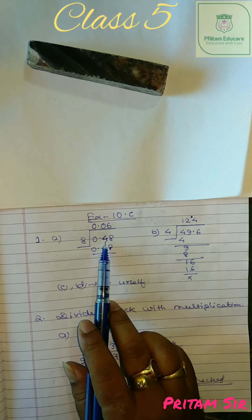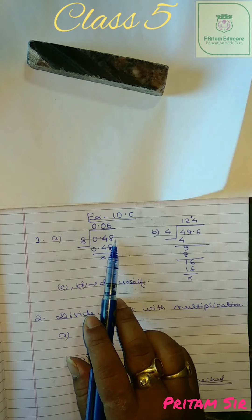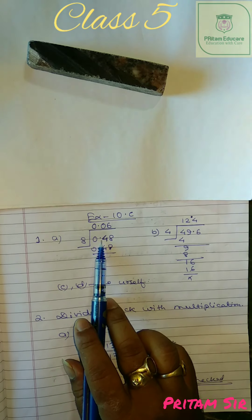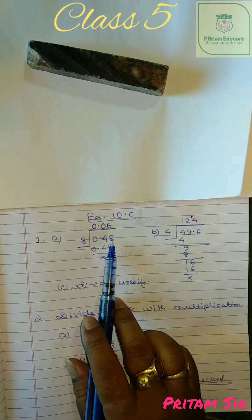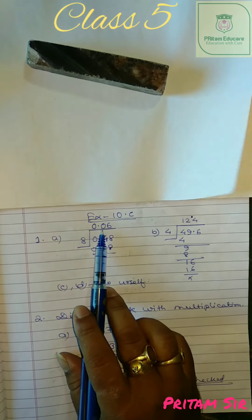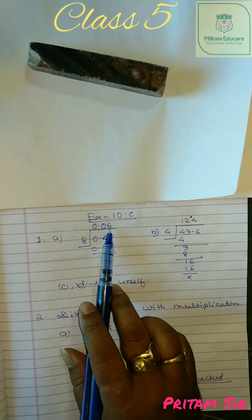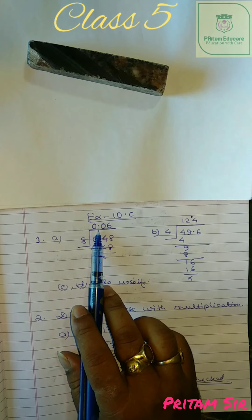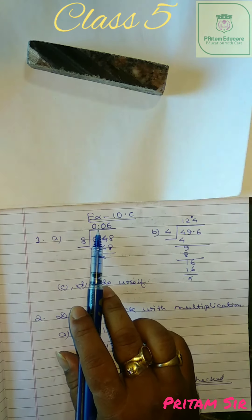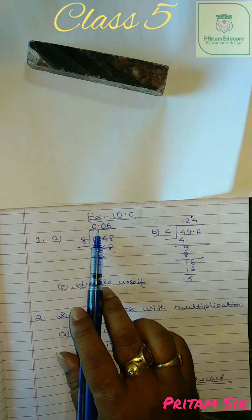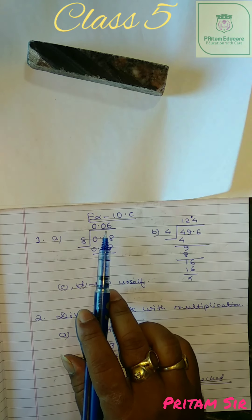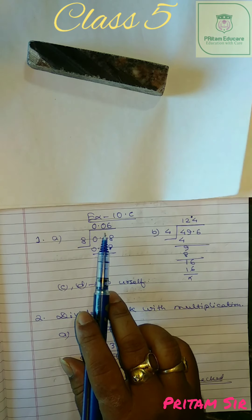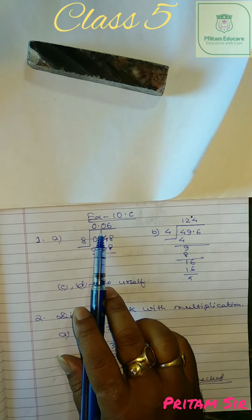So here given 0.48. After point how many digits? 2 digits. So here we will put before 2 digits we will place the point. In the book you see a little gap is also given 0 then little more gap big gap then 0.6.